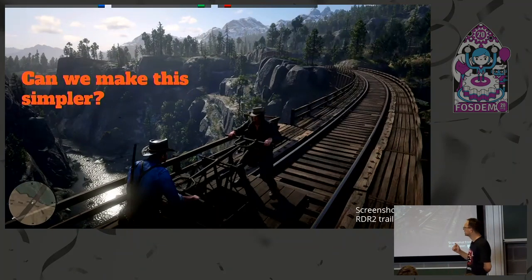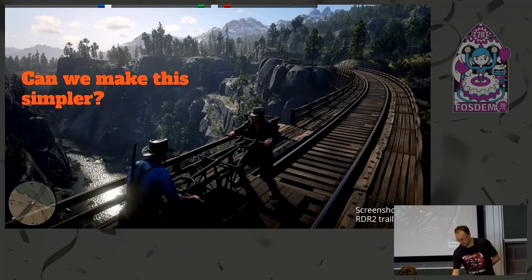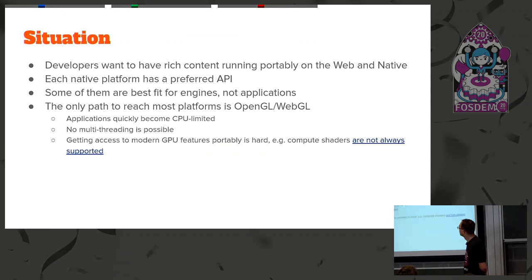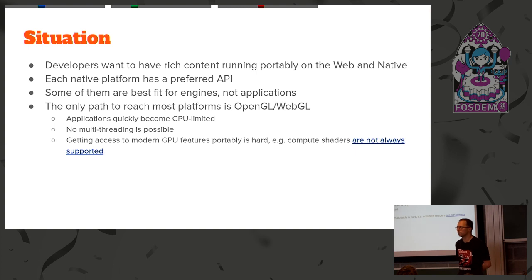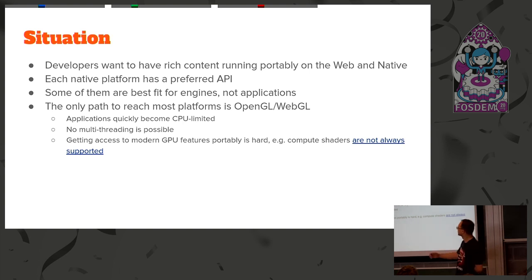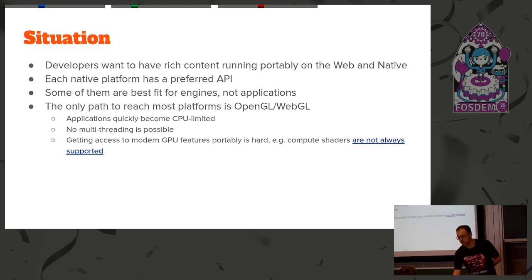The API that is portable today is OpenGL. Unfortunately, OpenGL is dying — every vendor tries to implement their Vulkan drivers in such a way that OpenGL is just an afterthought. Nobody optimizes for OpenGL, and it has very many limitations. The only good thing about OpenGL is that you can target the web with it today, with some limited subset.